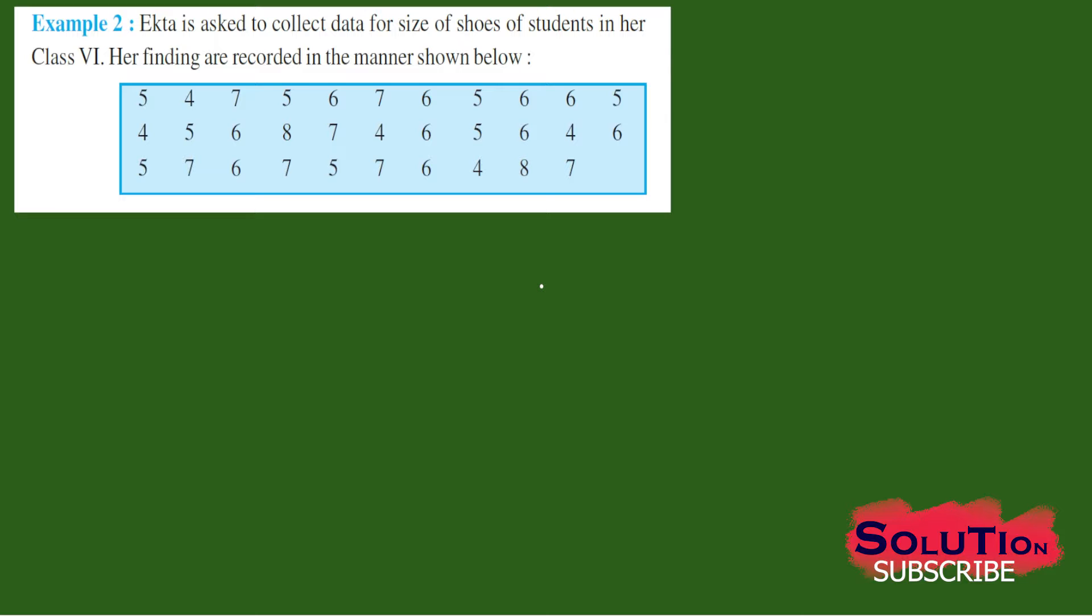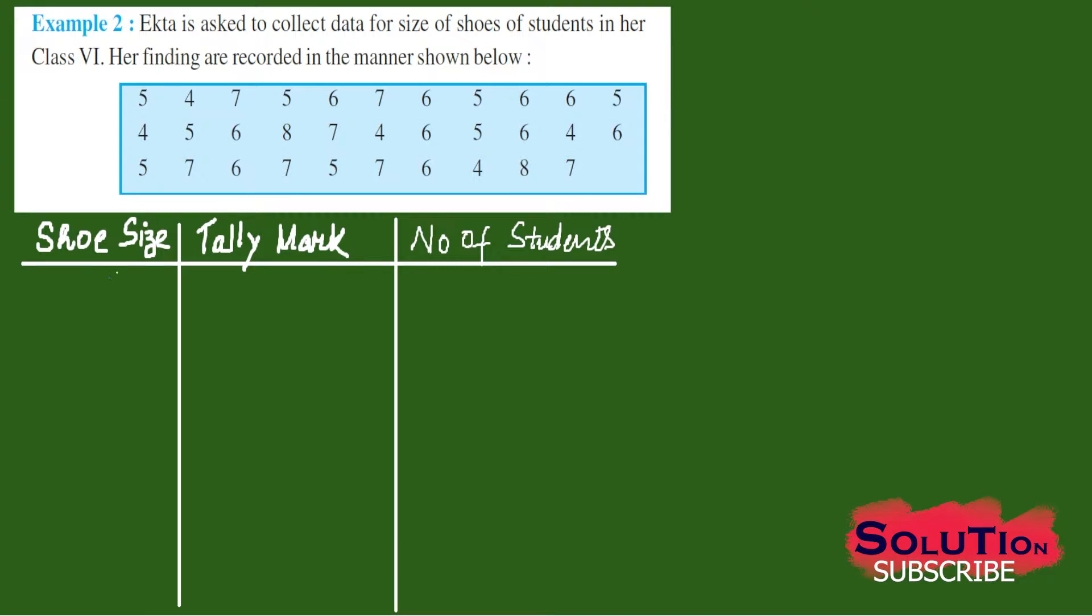So what exactly we are trying to do here, we will try to find how many students are there with a particular shoe size. Like how many students are there with shoe size 4, how many students are there with shoe size 5 and so on. So for that let us make a table. So we have shoe size in one column and another column we have number of students.